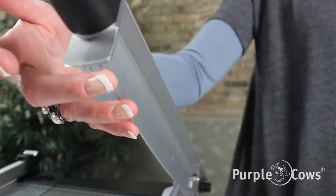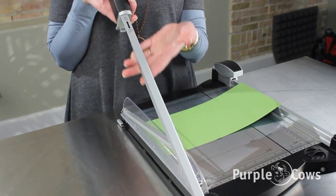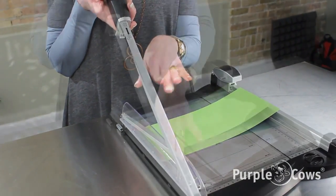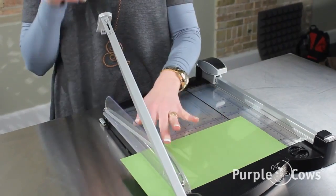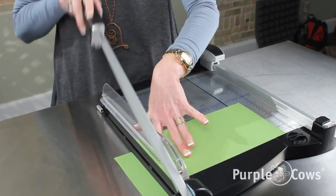The Purple Cows guillotine is a safety blade. The system doesn't use a sharp blade like a knife. It's two perfectly engineered right angles which gives us a perfect cut each time.